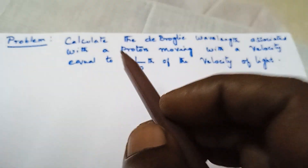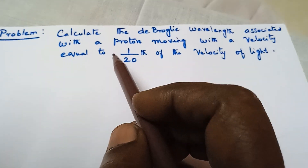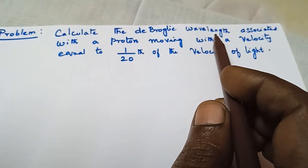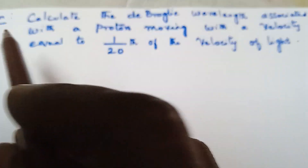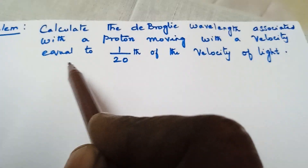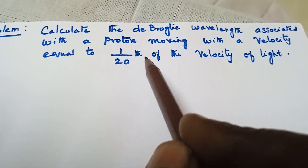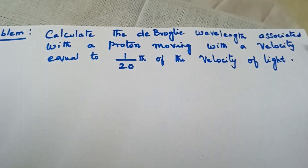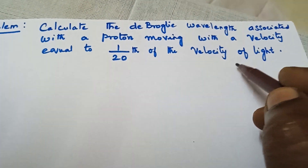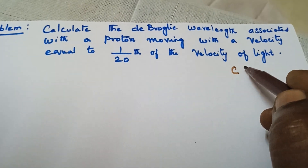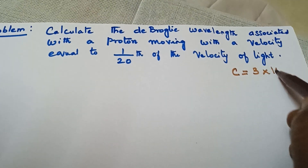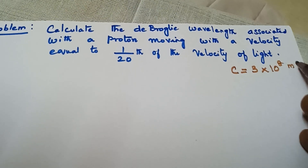Hi everyone. The problem given is: calculate the de Broglie wavelength associated with a proton moving with a velocity equal to 1/20th of the velocity of light. The velocity of light is usually taken as c, and the value of c is 3 × 10⁸ meters per second.